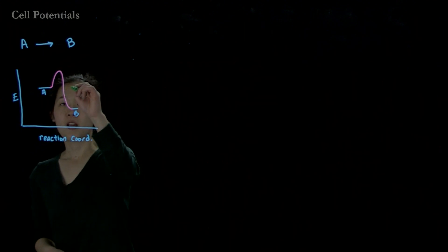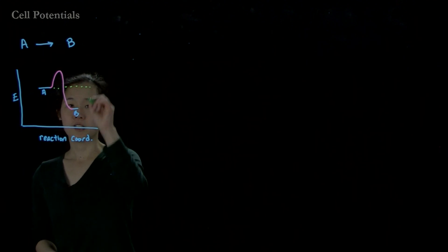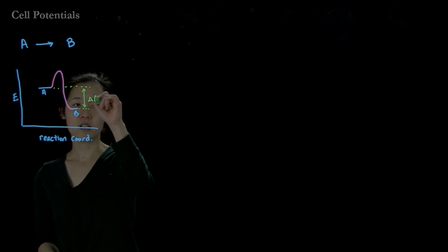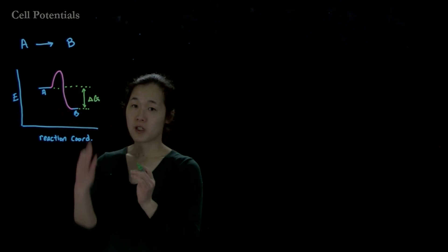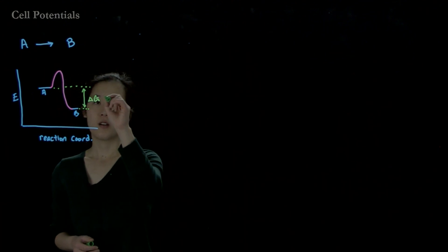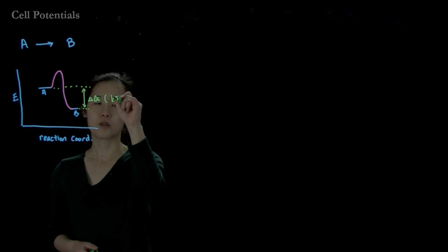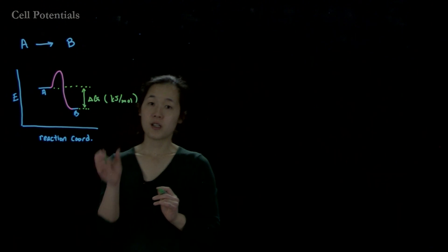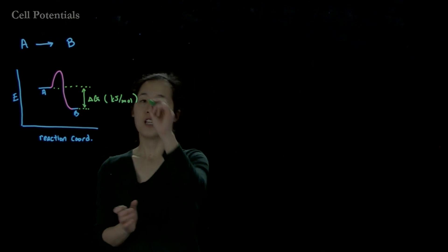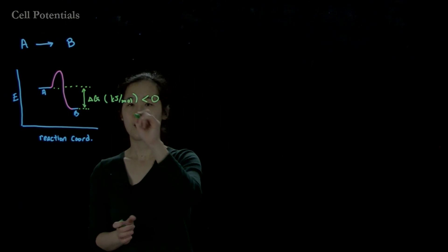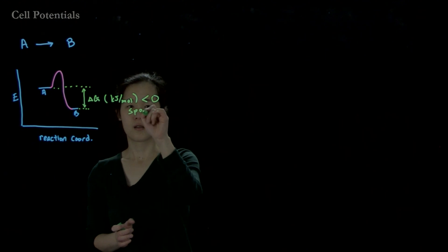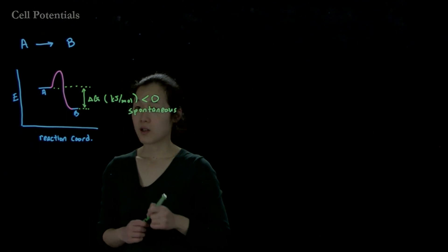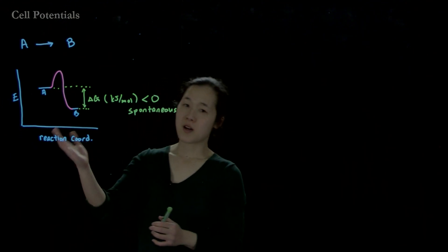If we compare the overall free energy — this is our delta G, in units of kilojoules per mole — then if delta G is less than zero, this reaction is spontaneous. We sometimes call this thermodynamically downhill.